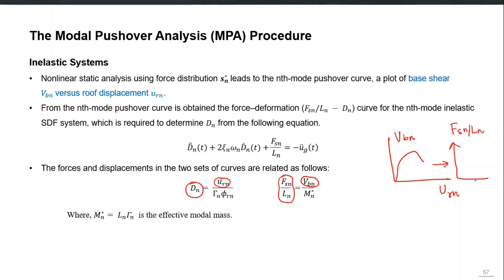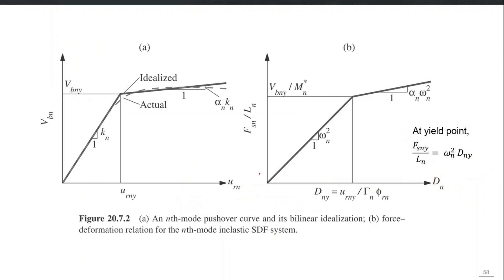The two sets of equations tell us how to carry out that conversion, and M_N* here is the effective modal mass. The dotted line is the actual pushover curve, and it is idealized as a bilinear curve in these force-deformation coordinates. This force-deformation curve can then be assigned to a single degree of freedom system.